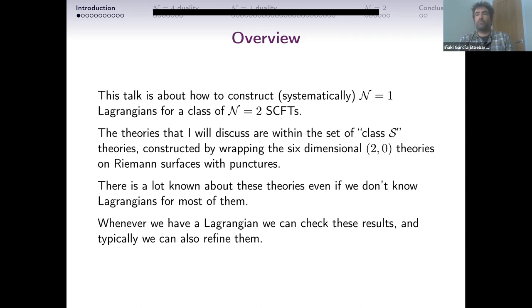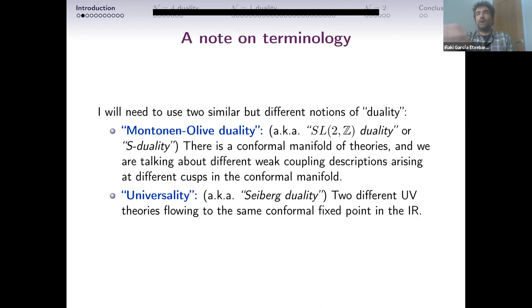As an example, in many of these cases the full superconformal index is unknown, but it's known in some limits, like a short limit and so on. If you have an N=1 Lagrangian, you can construct the index and do other things.